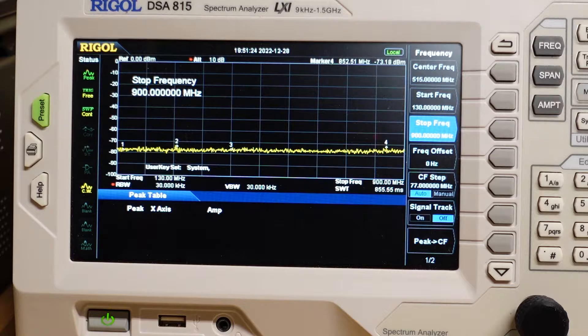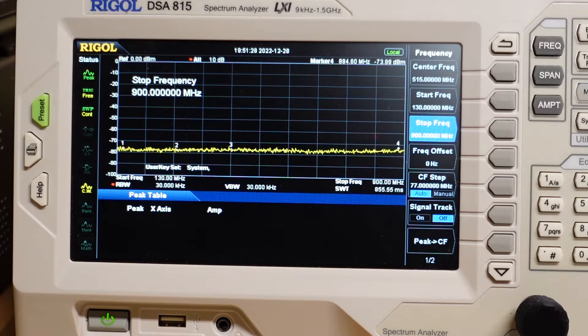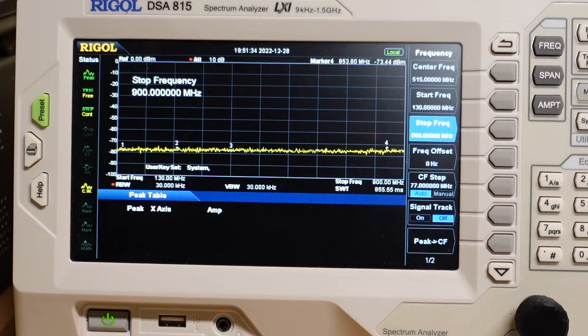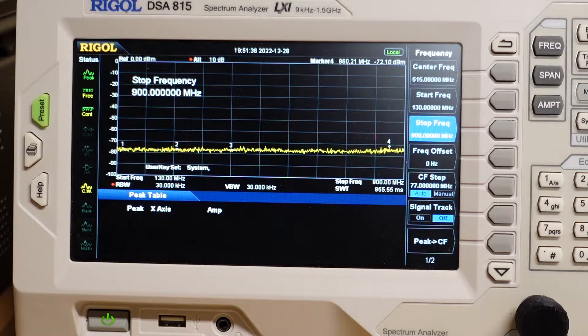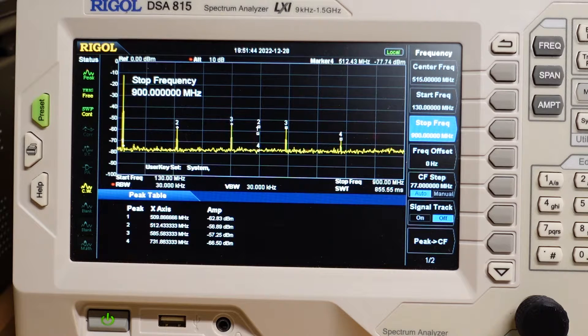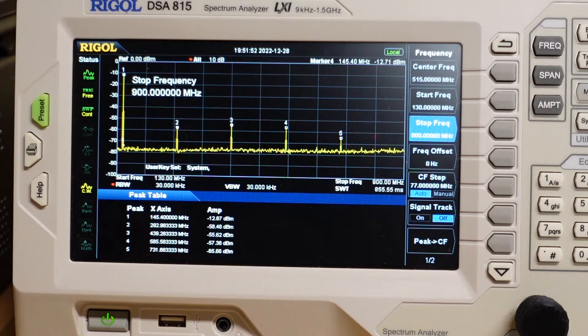Our range is starting at 130 megahertz going to 900 megahertz, which should encompass several harmonics for 146.52. It should give us all the way up to 5 on the screen. I've got the radio set on low power. Let's see what it looks like. And there are all the visible harmonics. Number one is our primary signal and that is showing up at minus 12.7 dBm.